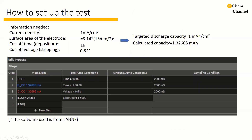Now I will show you how to set up the test to obtain the voltage profile. Before you start setting, several pieces of information are needed: the current density, the surface area of the electrode, the cutoff time for the deposition, and the cutoff voltage for stripping. In this example test, I want to set the charge and discharge current density to be 1 mA per square centimeter. If my cutoff time of deposition is 1 hour, the targeted discharge capacity is 1 mAh per square centimeter.